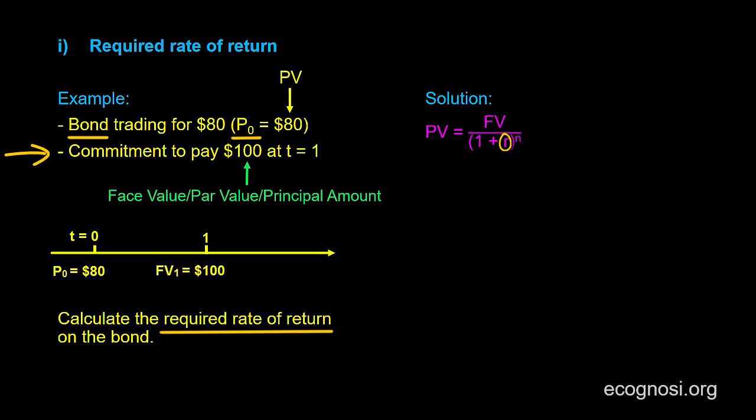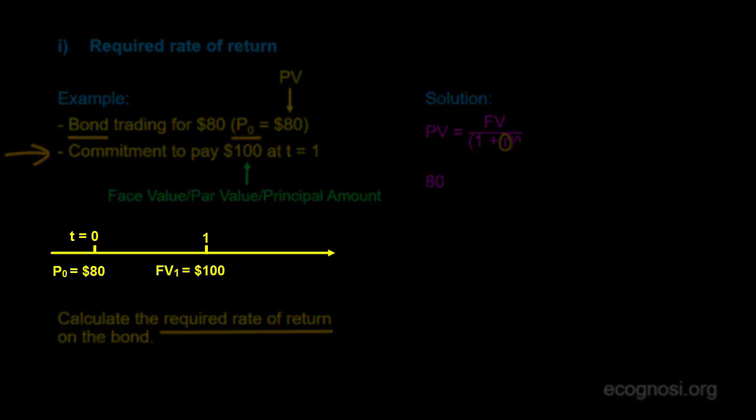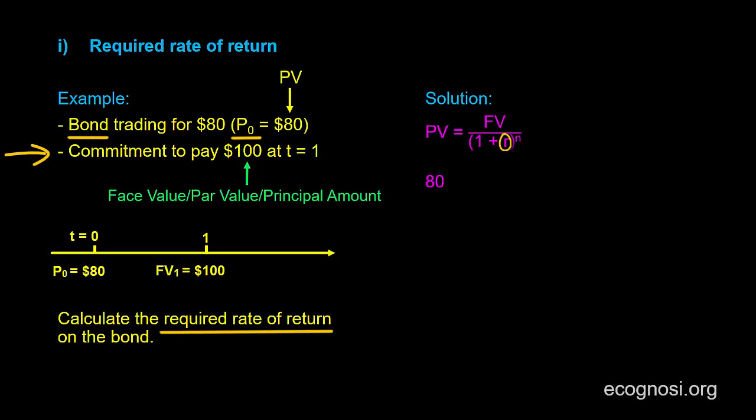So the present value, which is the same as the price of 80, see the visual representation of our data, equals the bond's face value of 100, which in this case we also interpreted as the future value at year 1,